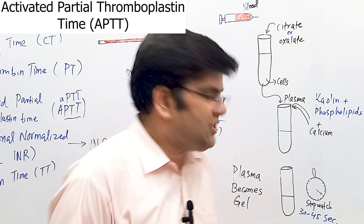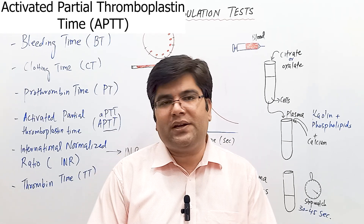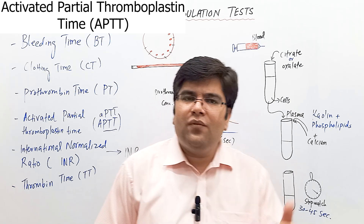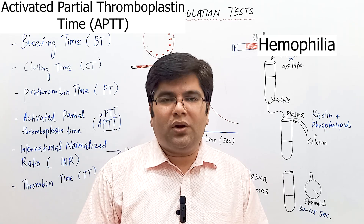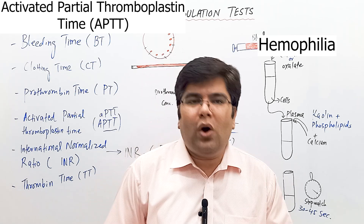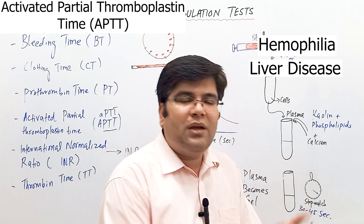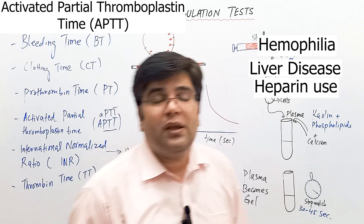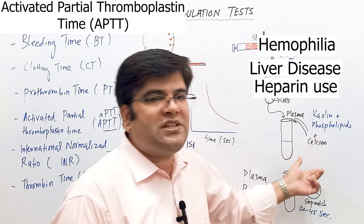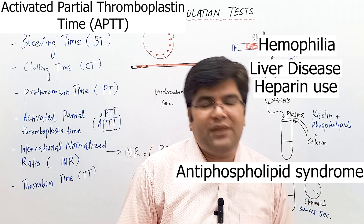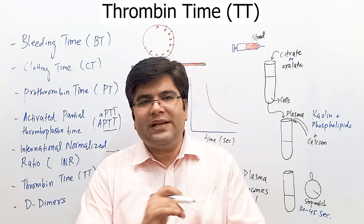The normal value of APTT is 30 to 45 seconds. APTT is prolonged in deficiency of any factor in the intrinsic pathway — for example in hemophilia (factors 8, 9, or 11). It is also prolonged in liver disease, when intrinsic pathway clotting factors are reduced, with heparin use (which inactivates intrinsic pathway factors), and in antiphospholipid syndrome.